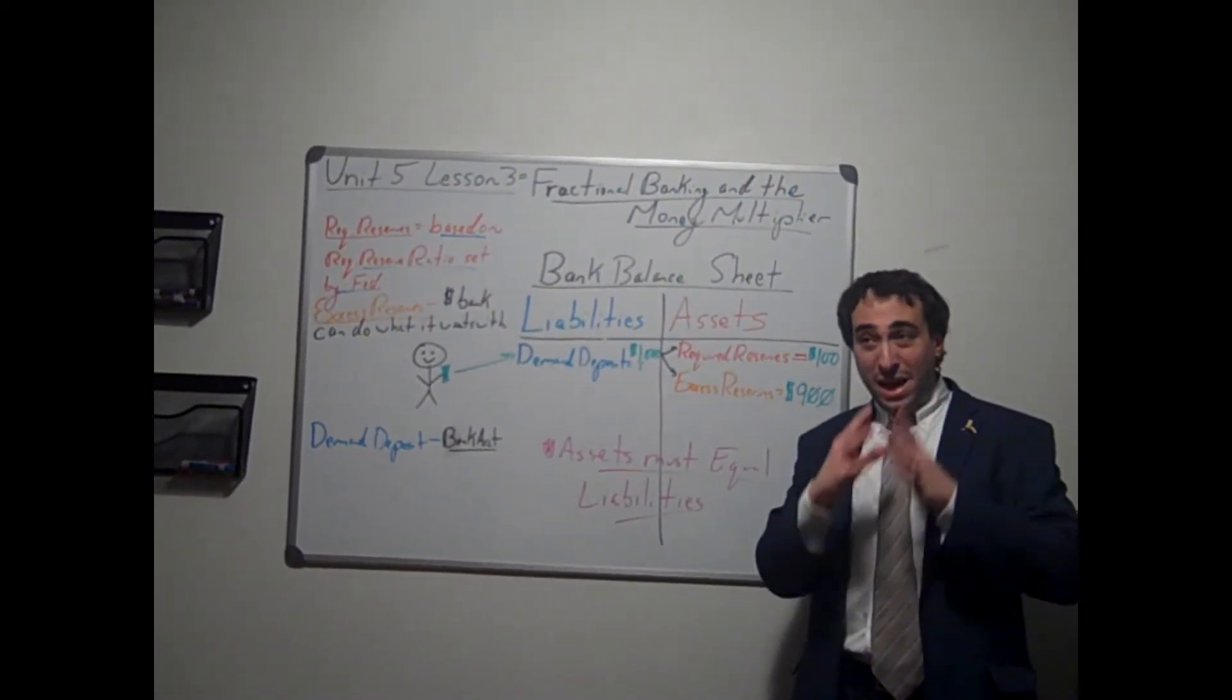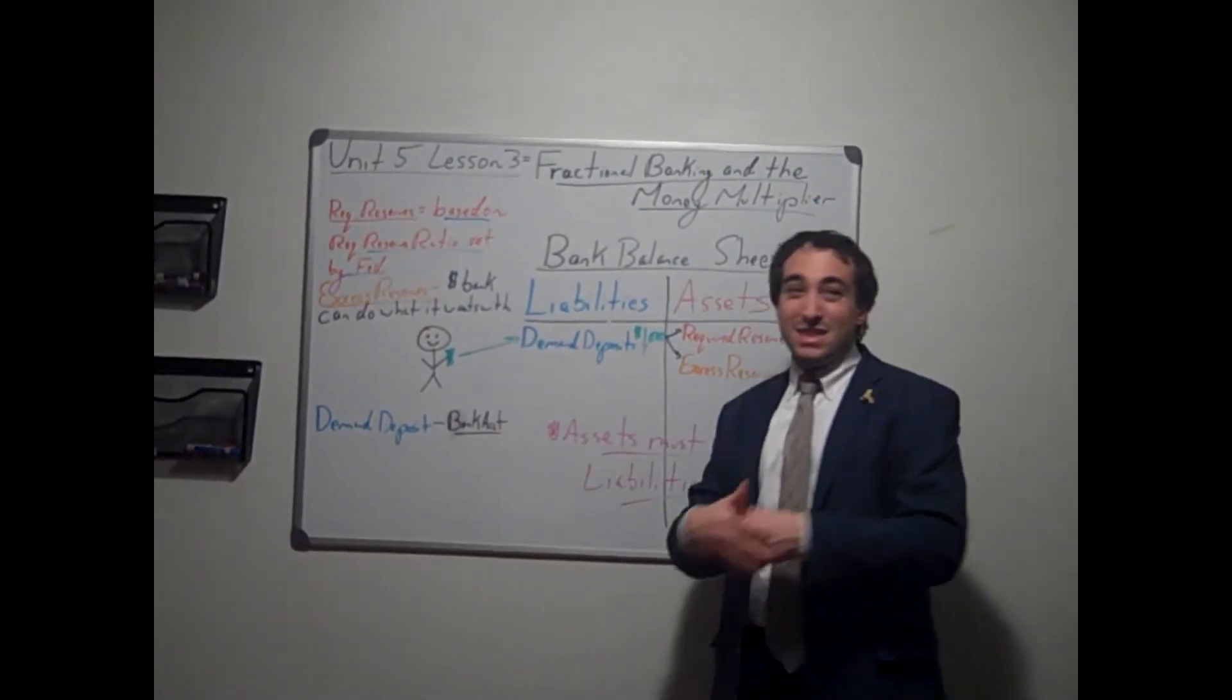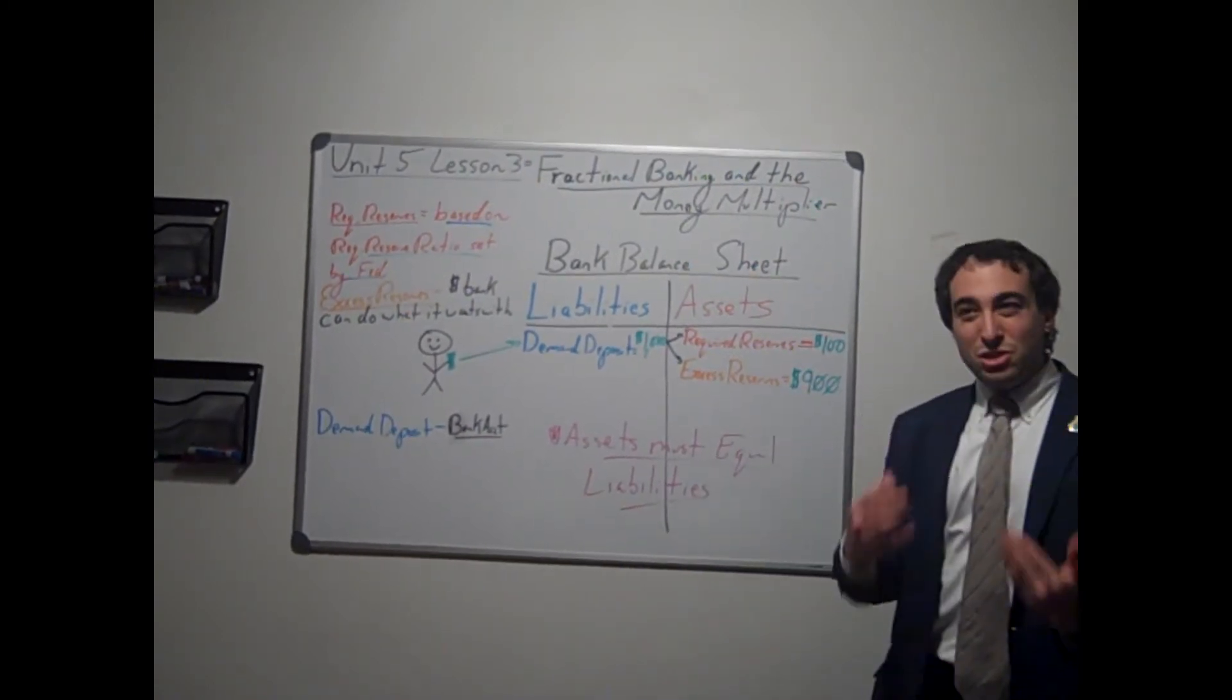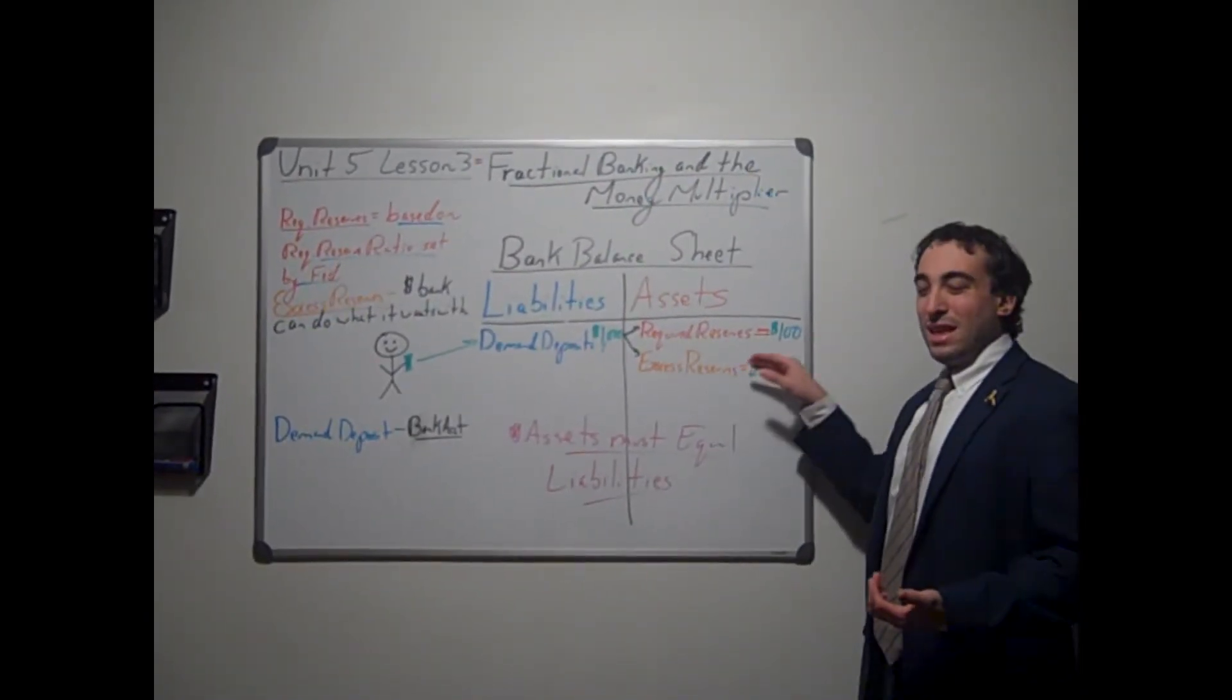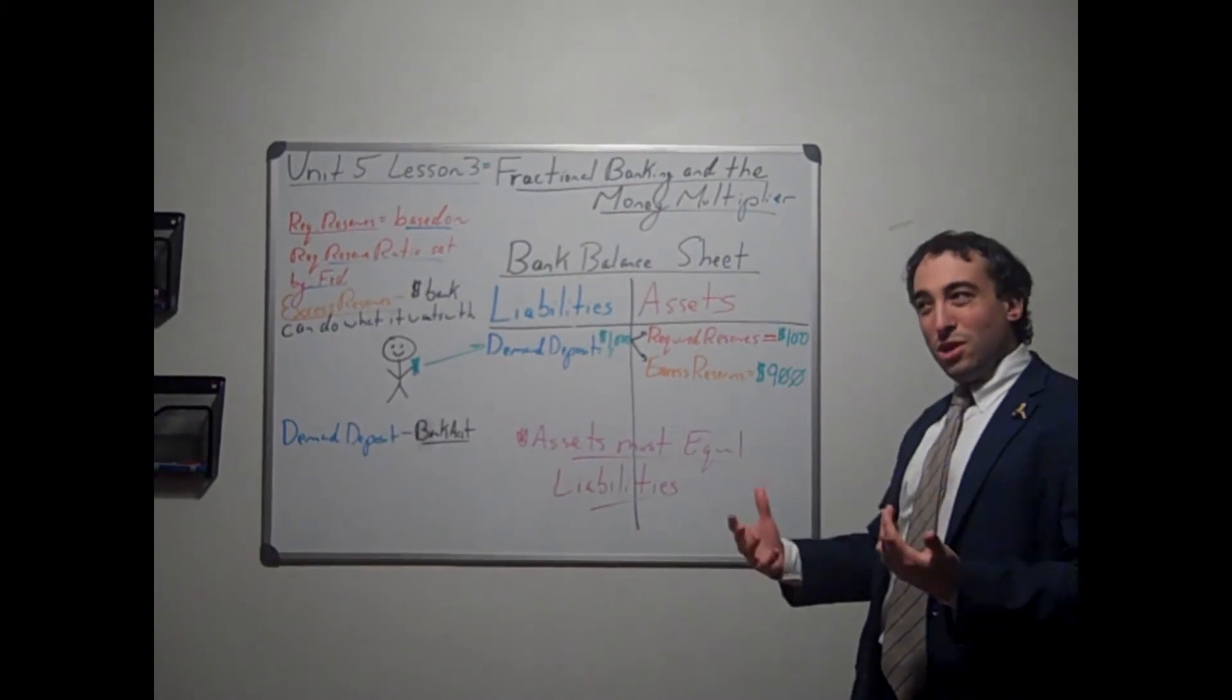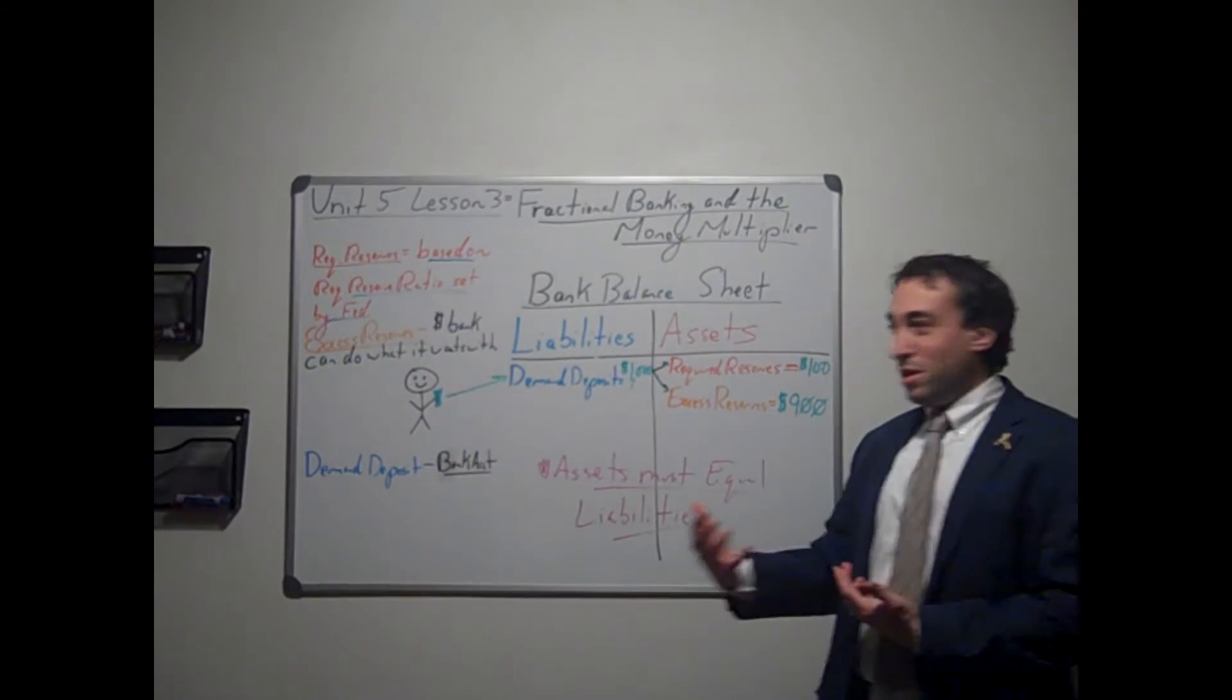So remember, the bank now, why does the bank want you to put your money into the bank? It is not for altruism. It is for profit. Now what the bank can do with these excess reserves is make them loanable funds. They can now turn that $900, now they have $900 available to loan. So excess reserves are one and the same as potential loanable funds.